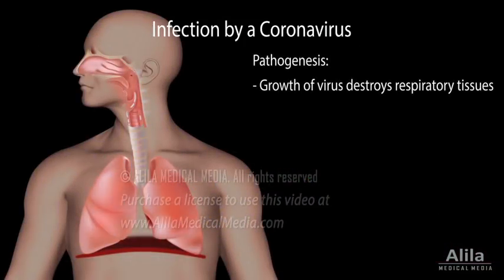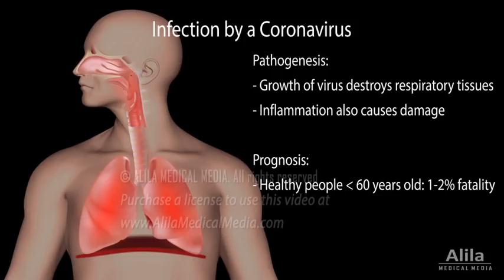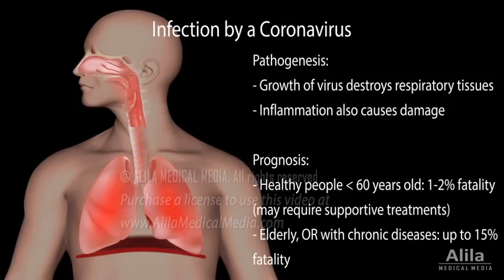Infection triggers the body's inflammatory response, which brings immune cells to the site to fight the virus. While inflammation is an important defense mechanism, it may become excessive and cause damage to the body's own tissues, contributing to the severity of the disease. In an otherwise healthy person, there is a good chance that the virus is eventually eliminated and the patient recovers, although some may require supportive treatments. On the other hand, people with weakened immune systems or underlying chronic diseases may progress to severe pneumonia or acute respiratory distress syndrome, which can be fatal.